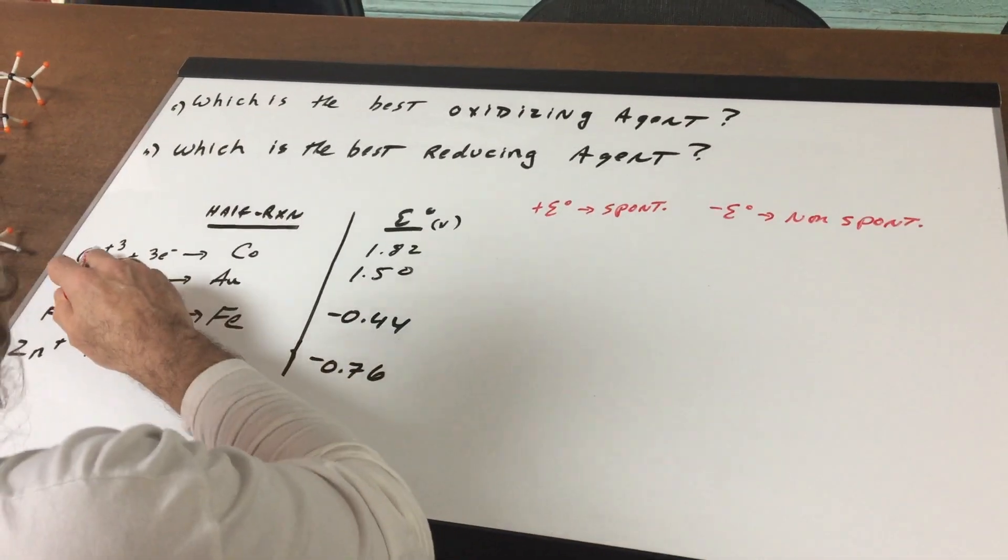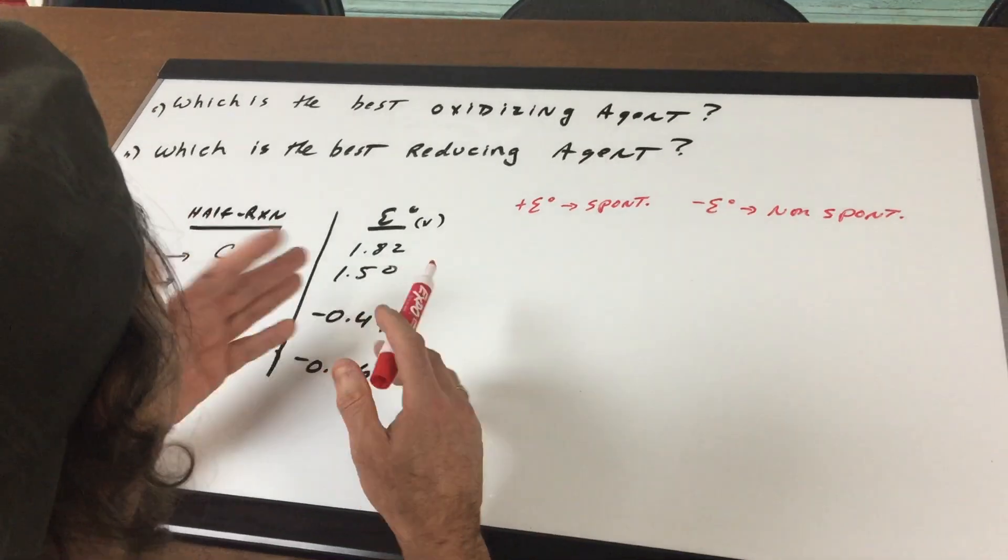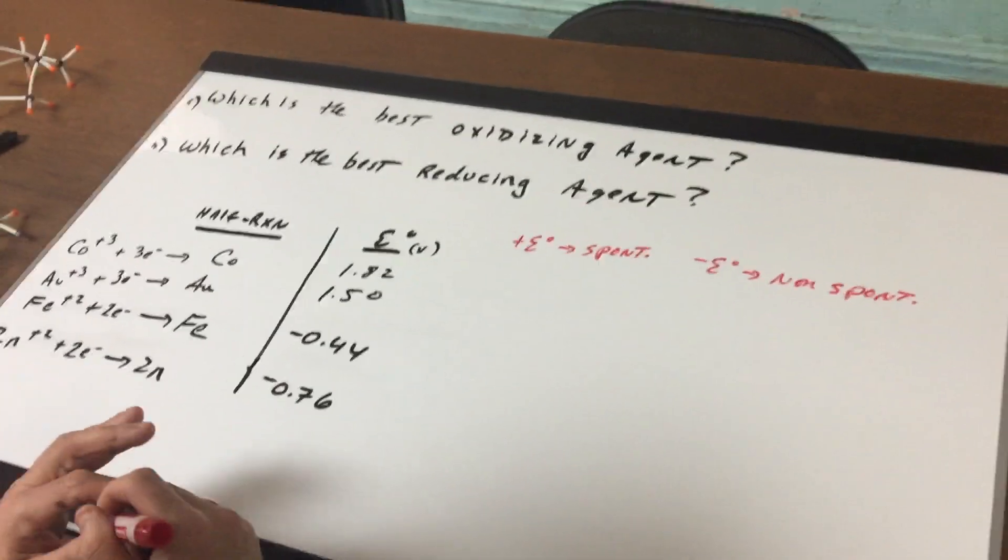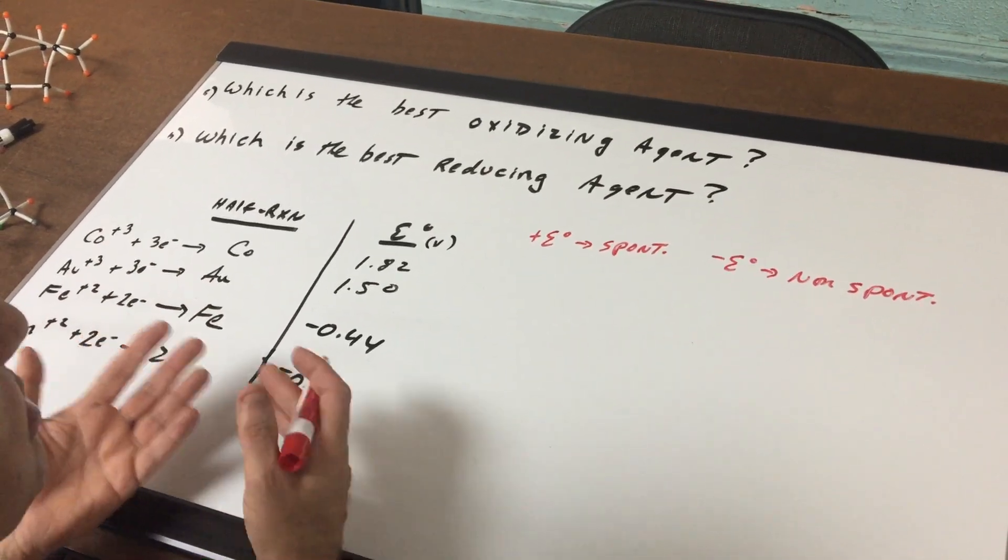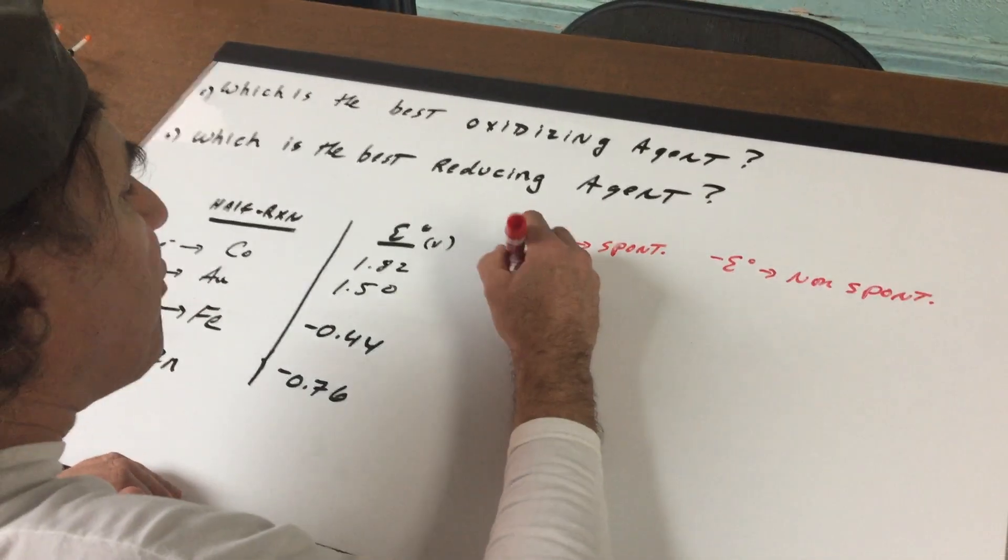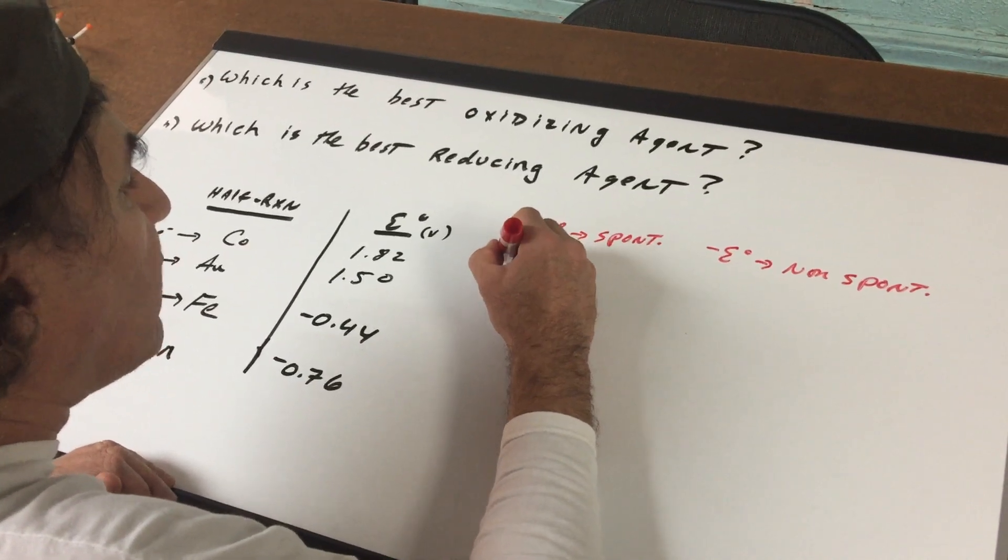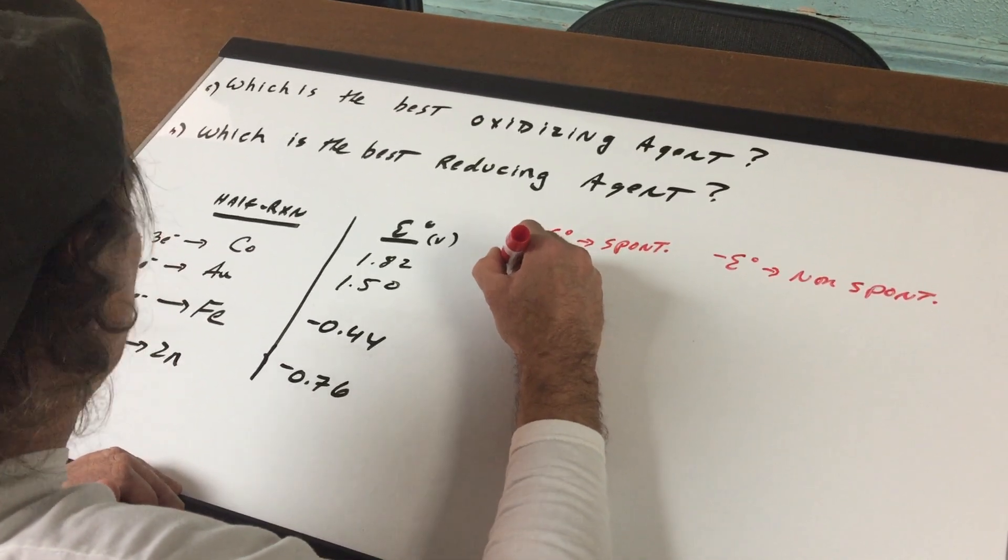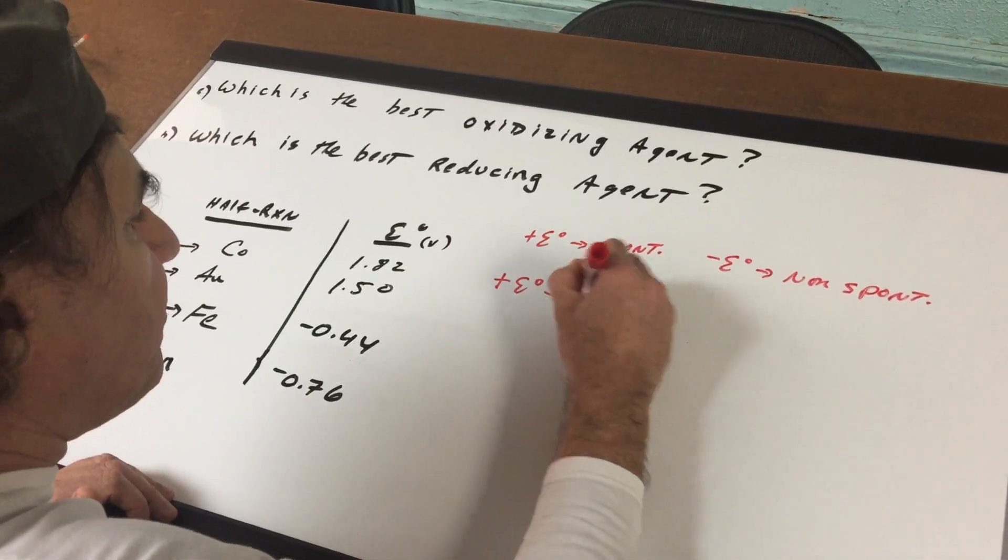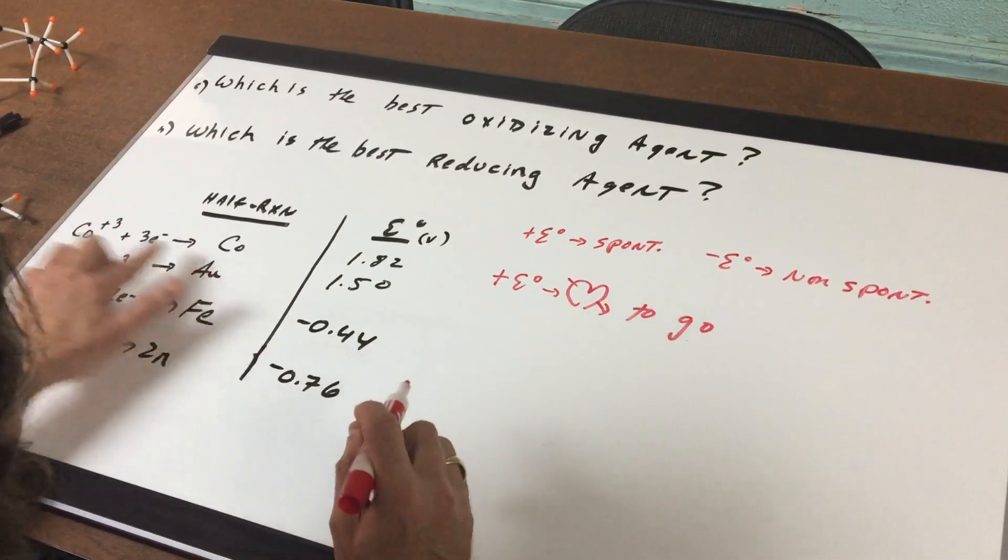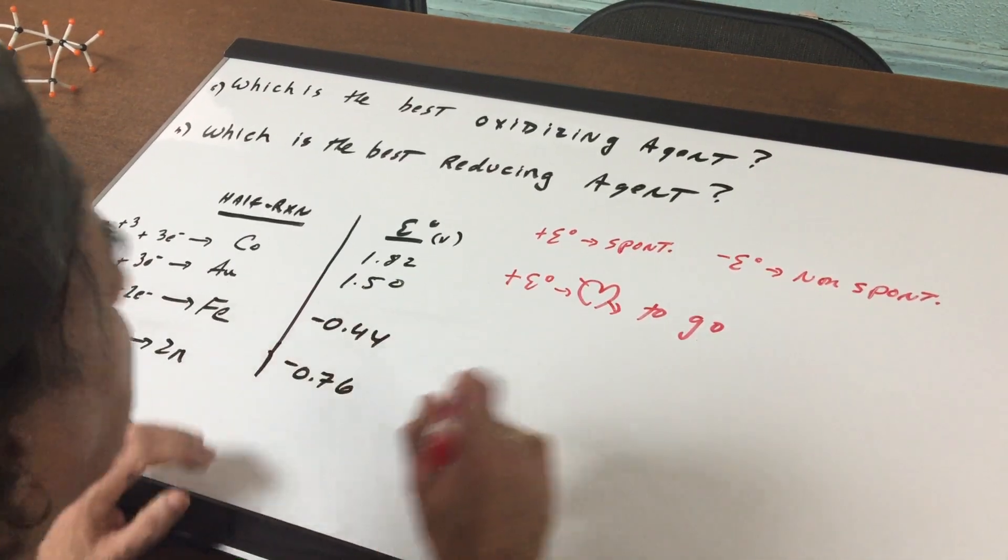Now in the first reaction, I notice it's the most positive E0, so the guy that's the most positive means he wants to be reduced the most of everyone. So I'm going to write positive E0 loves to go. So that means that this first reaction loves to go.